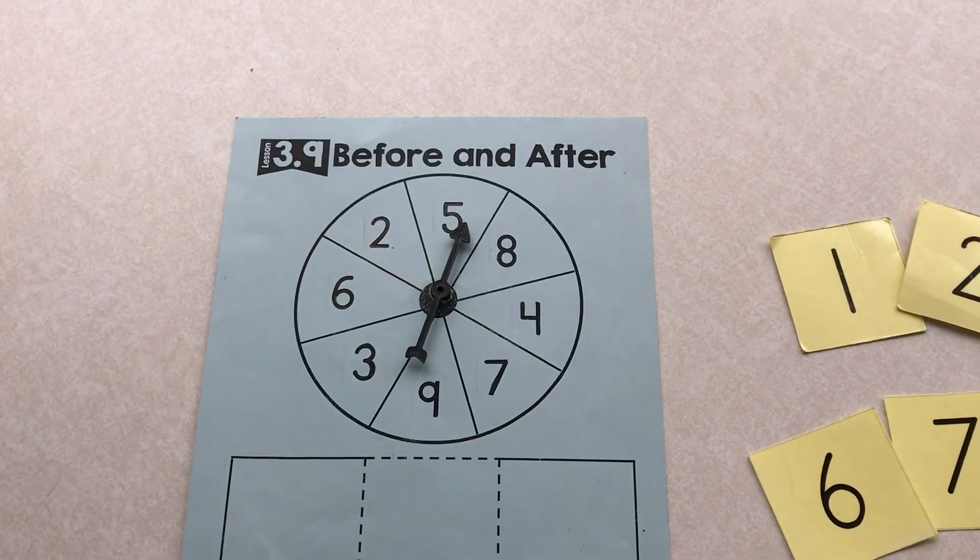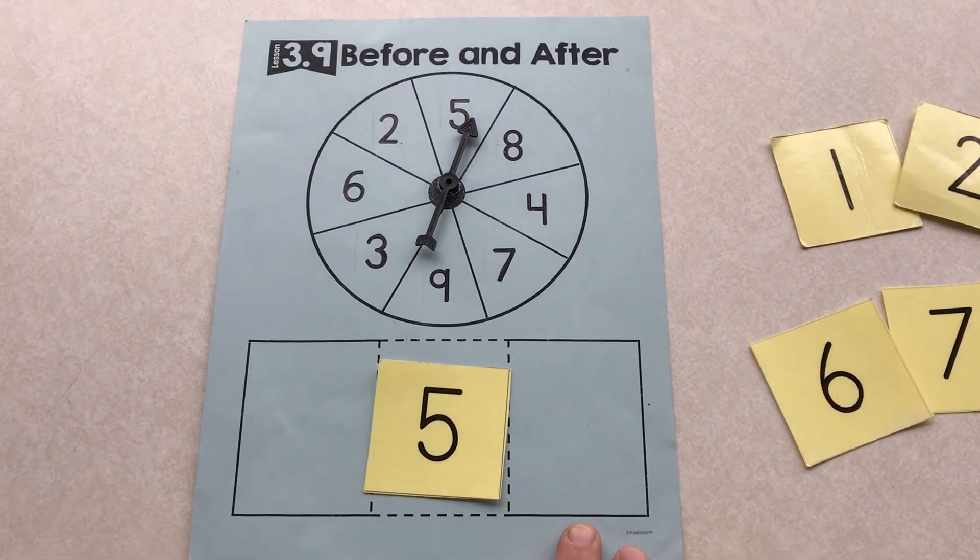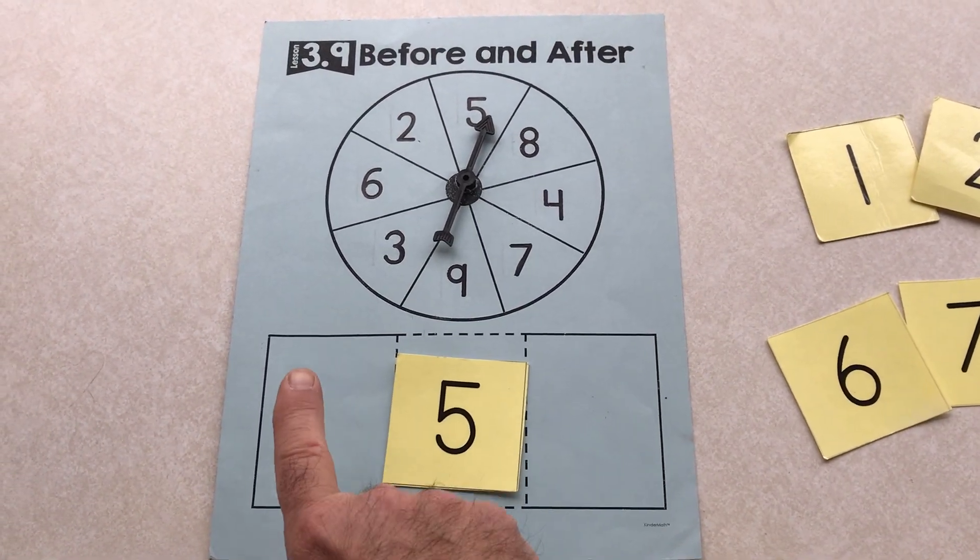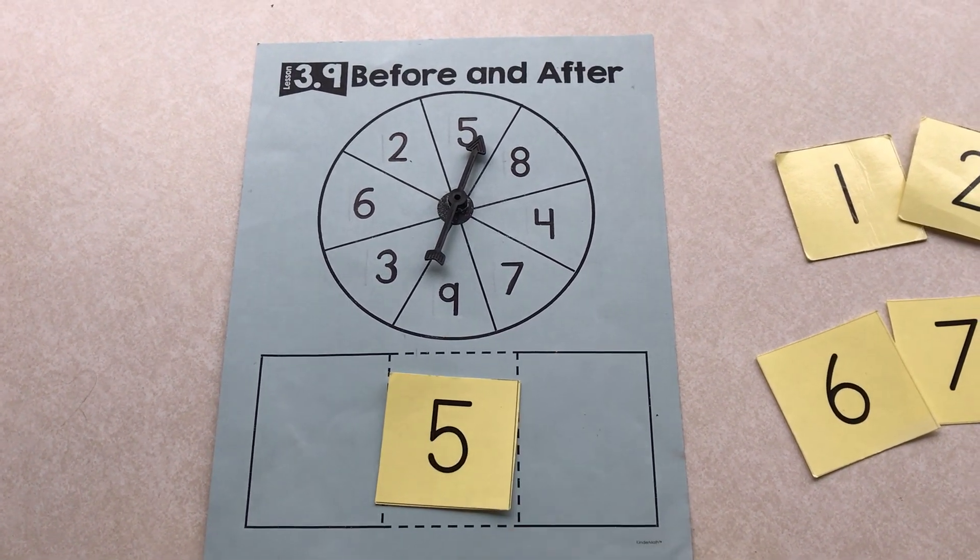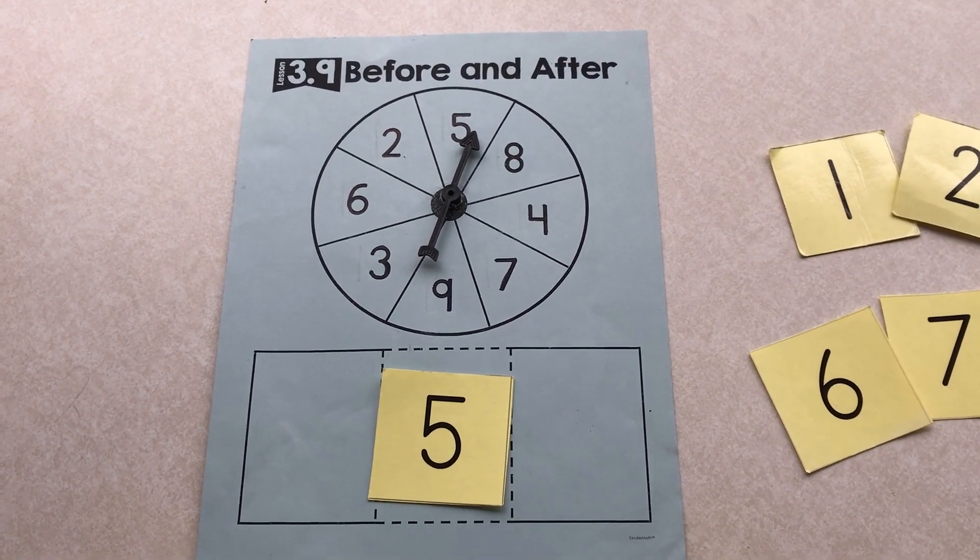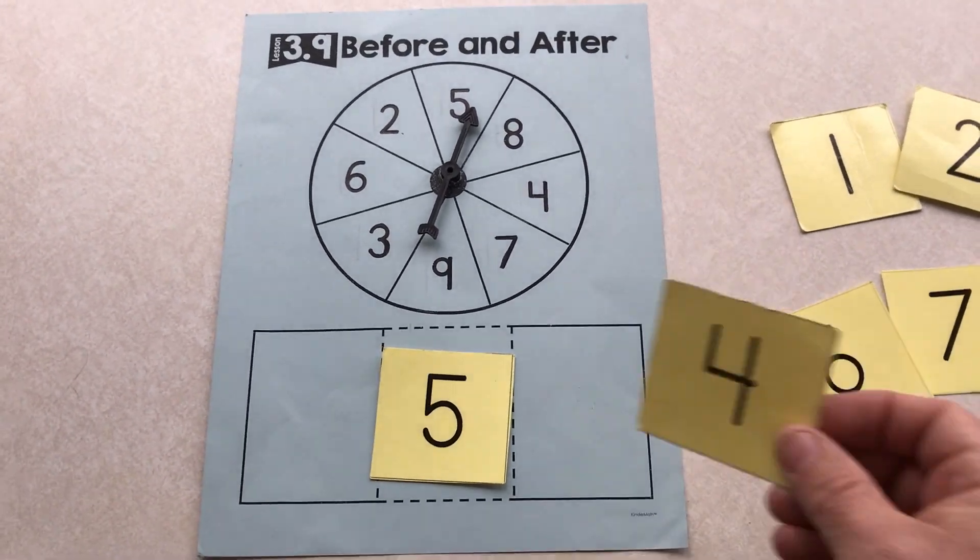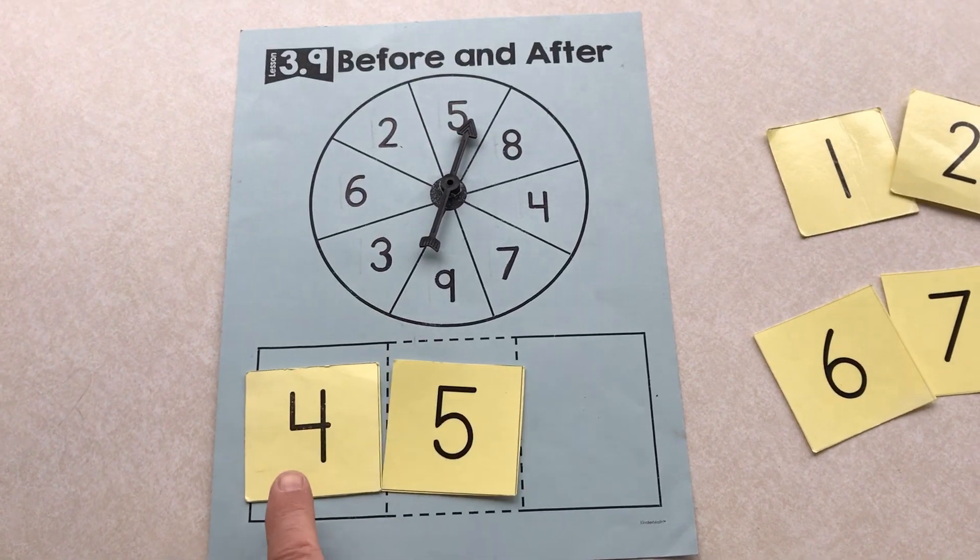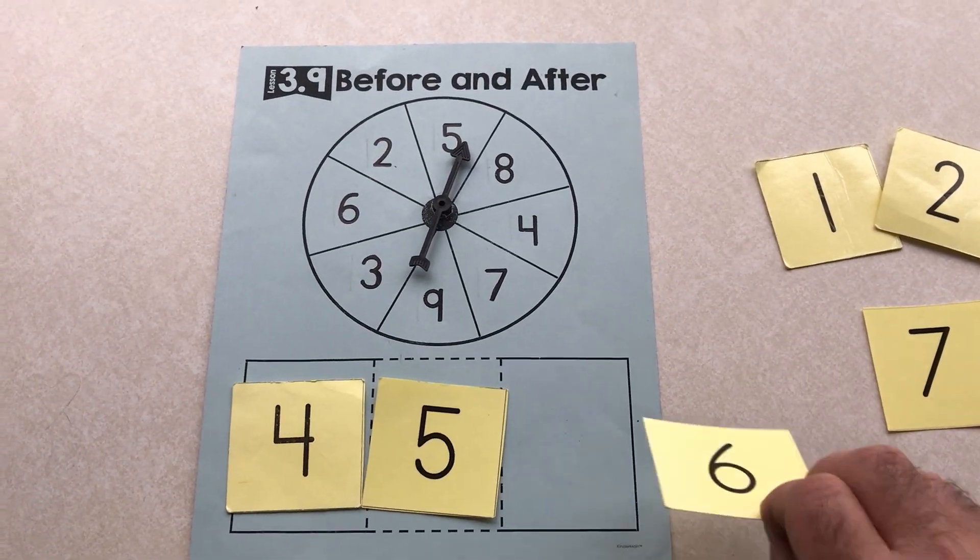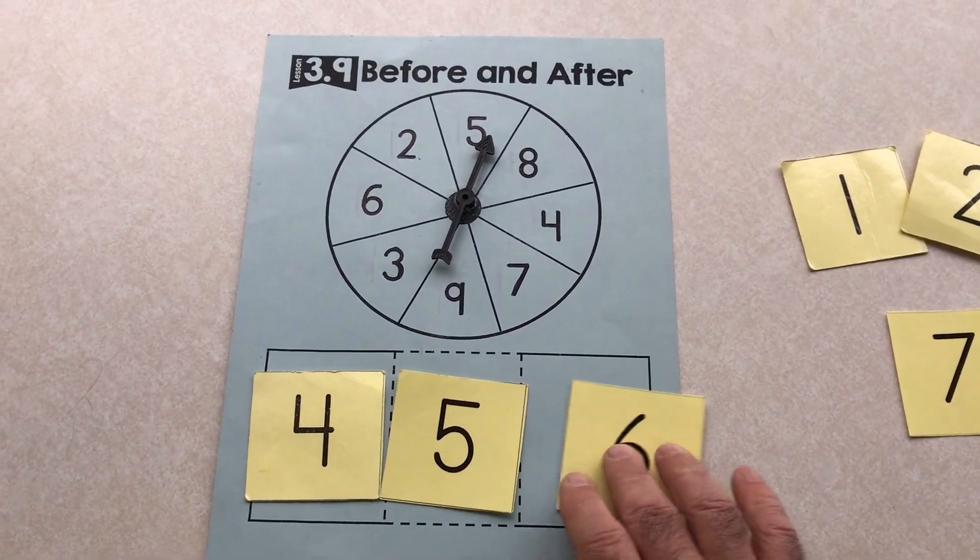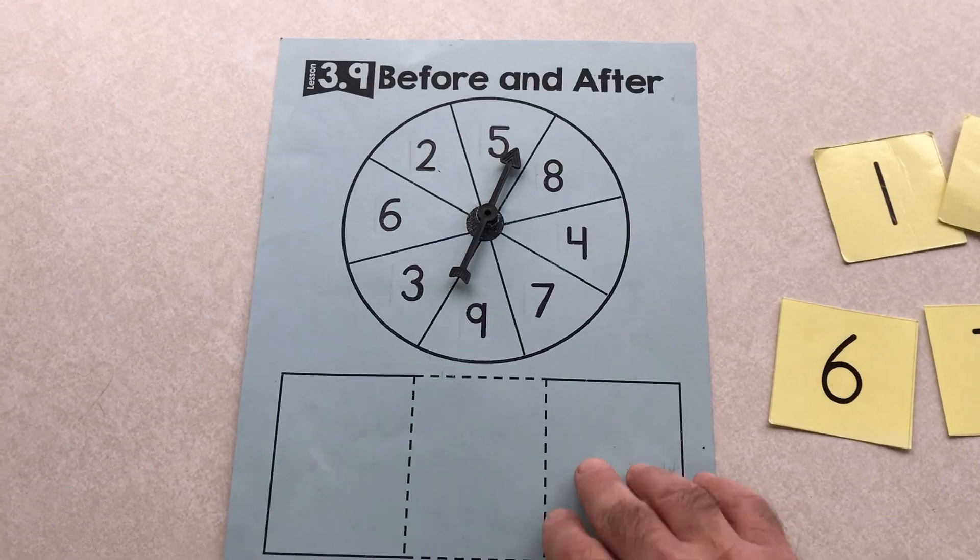This is pointed to five. So five's my number. I want you to put what comes before and what comes after. Four, five, six. Okay, spin again.